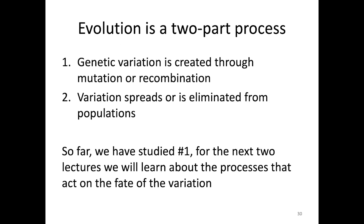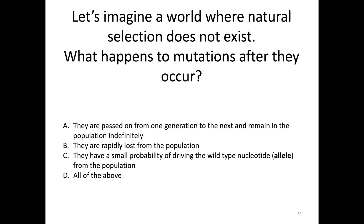Evolution is a two-step process: we generate variation, and then we understand what processes influence the frequency of that variation — either increasing it and driving it to fixation, or decreasing it and causing it to drop out of the population altogether. So far we've studied generation of genetic variation, and now we're going to study the processes that alter its frequency. Our first question: let's imagine a world where natural selection does not exist — what happens to mutations after they occur?